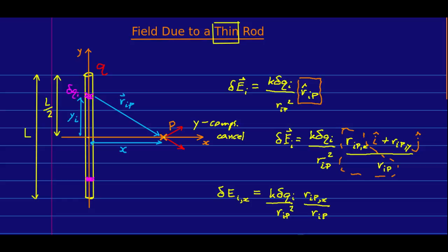And so, we want to be able to express everything in terms of y_i. This little chunk will have some length that we could call delta y_i.